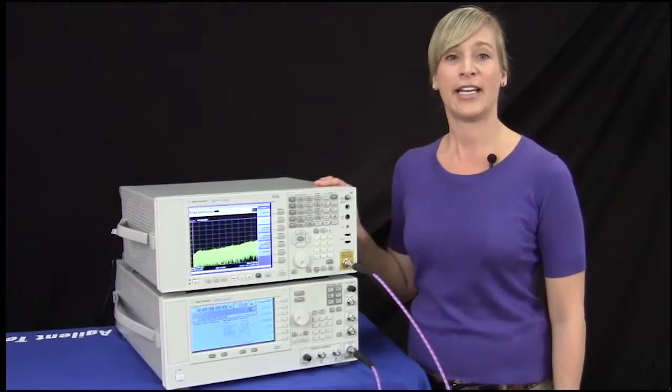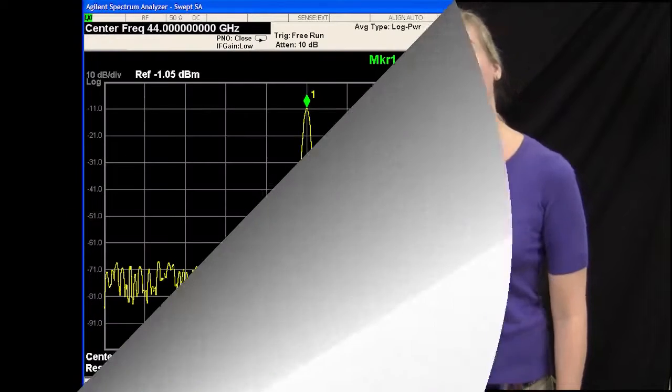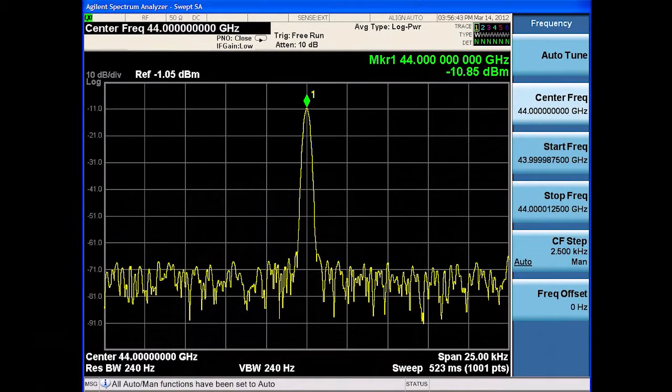The EXA comes with an auto tune function and by pressing the auto tune function the signal analyzer detects the strongest signal within the span. This is a great tool for quickly identifying your signal of interest.